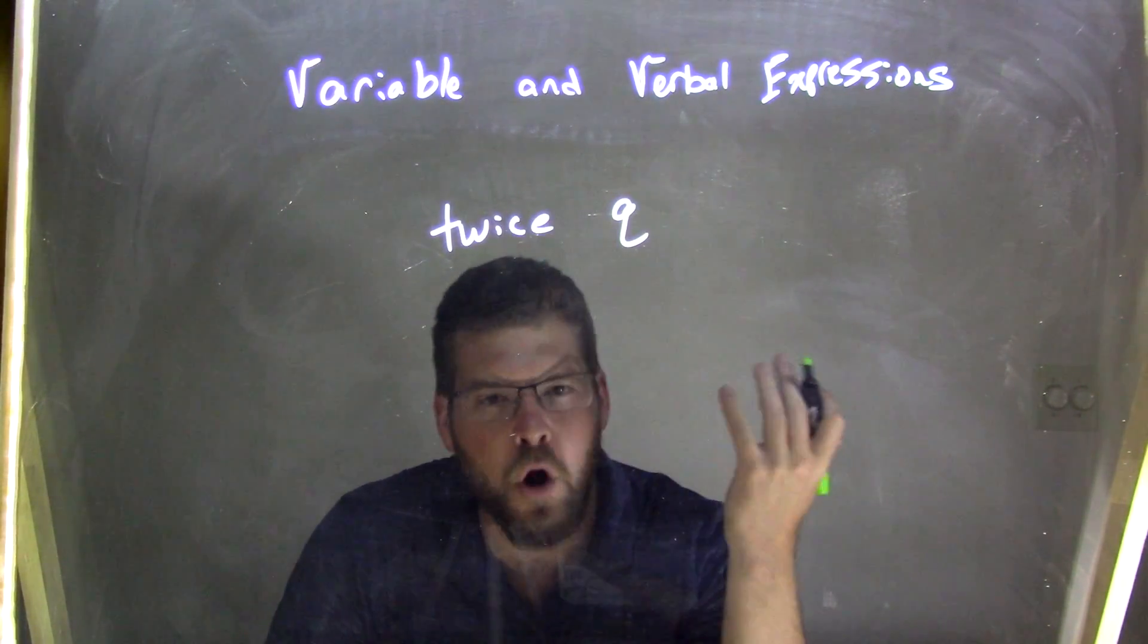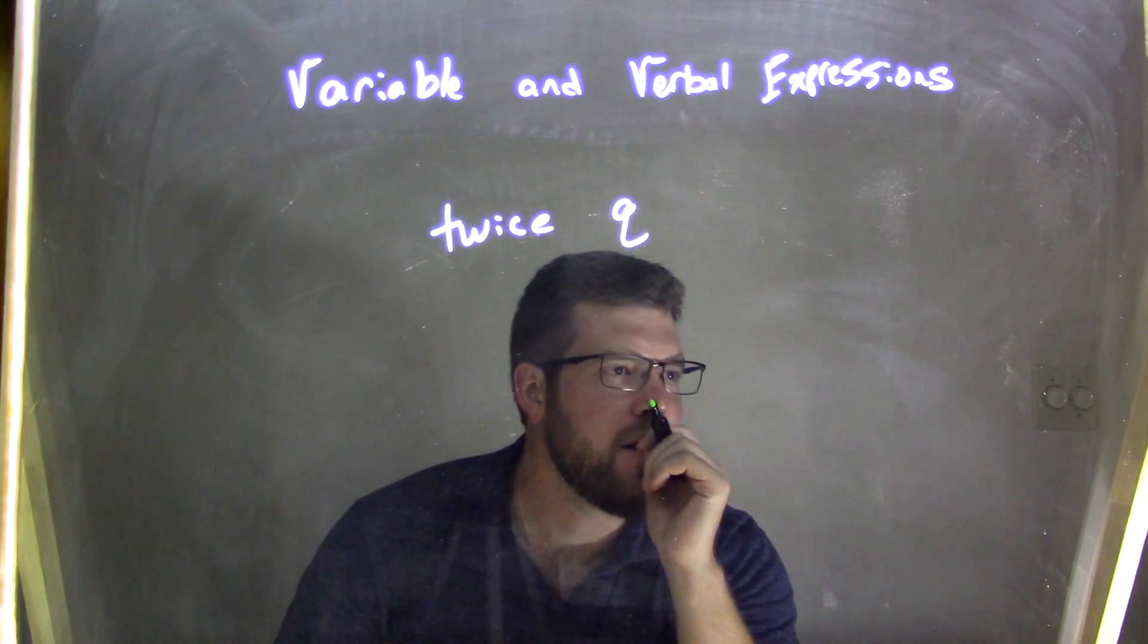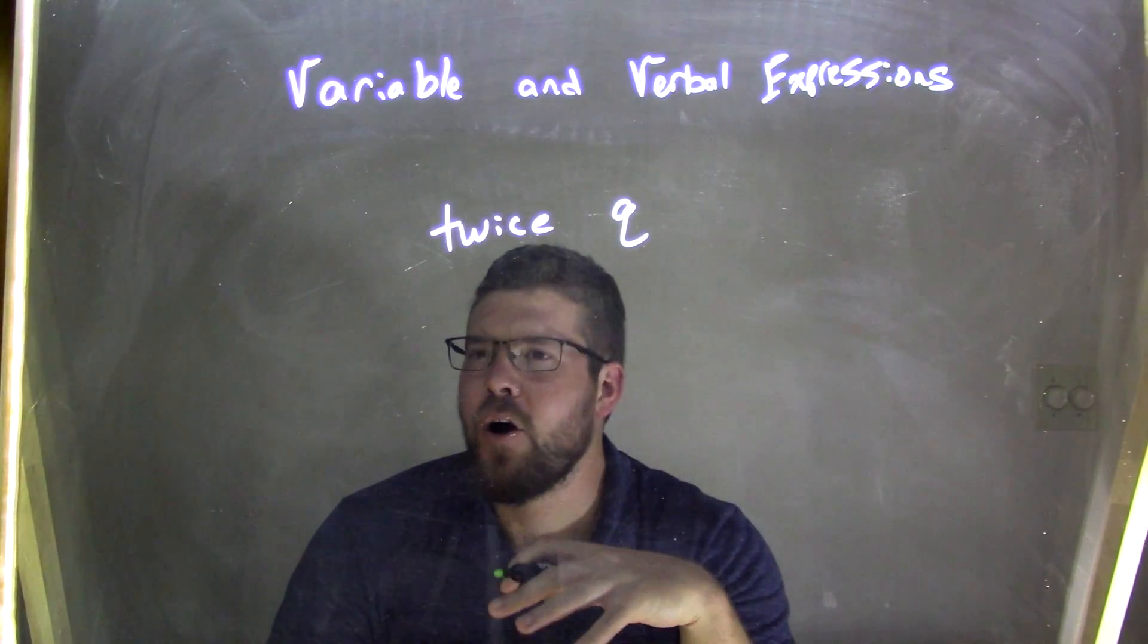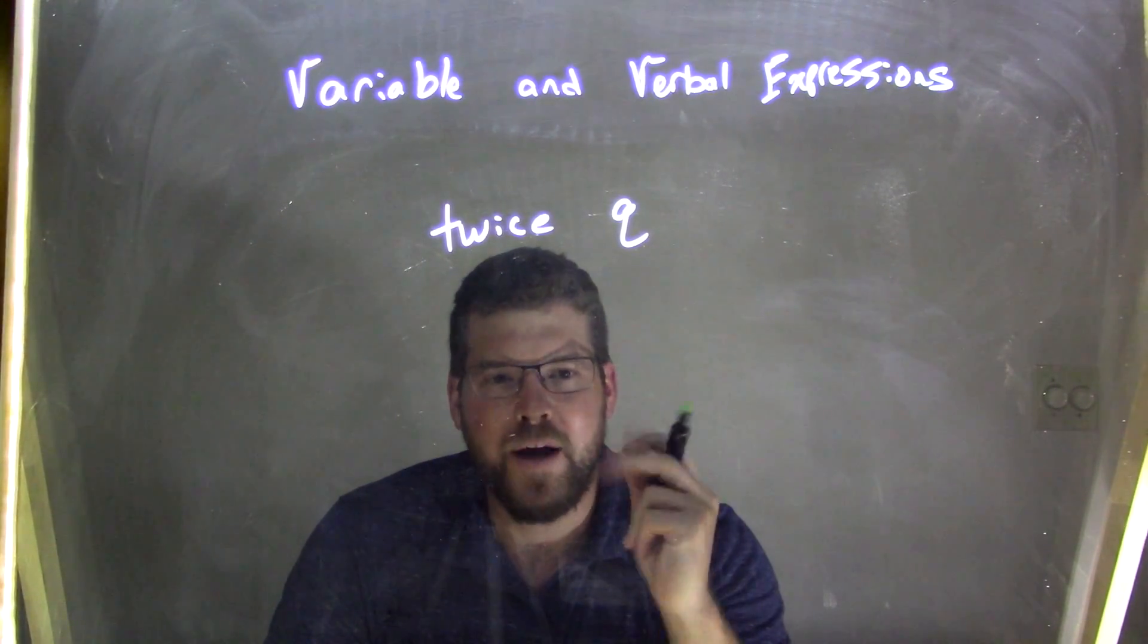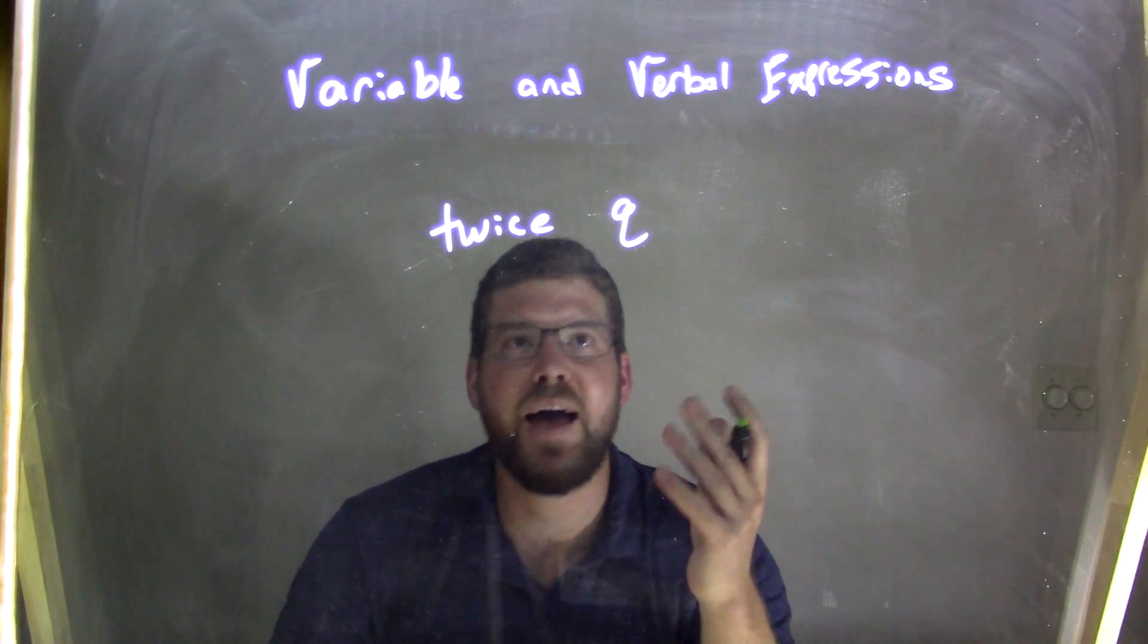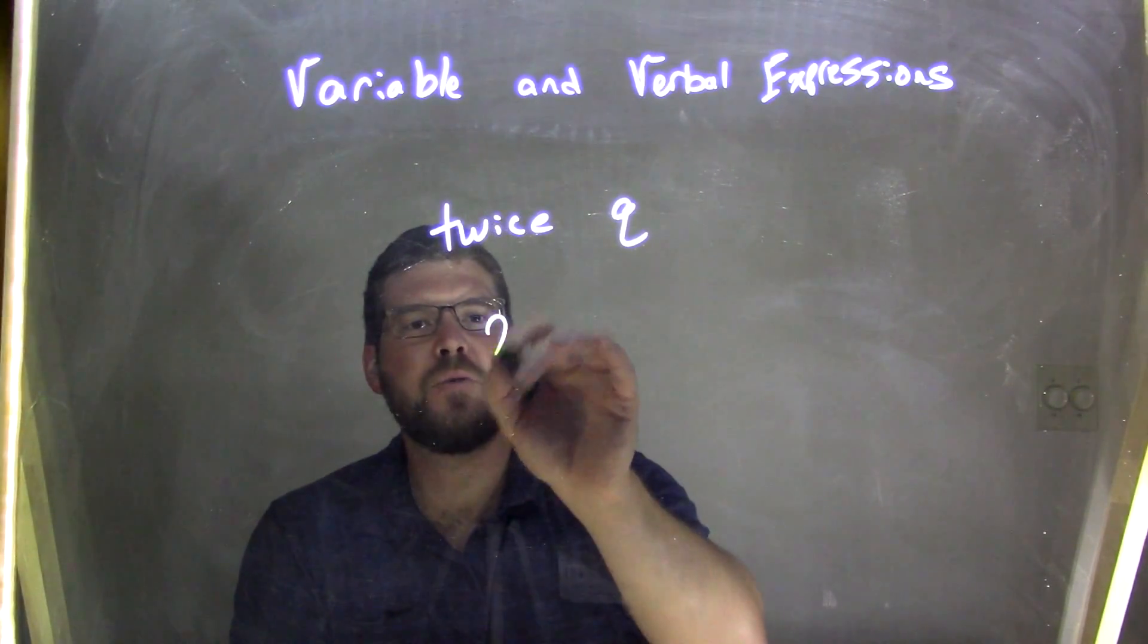If something's twice as large, maybe as something else, you know, twice as big, I would think of the number 2. Twice being 2. So twice Q would be 2Q.